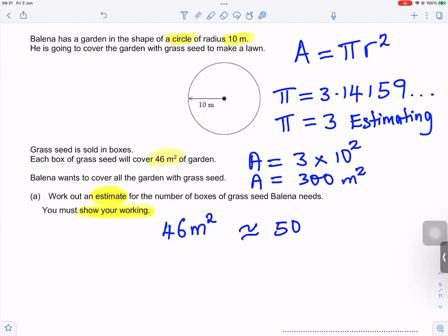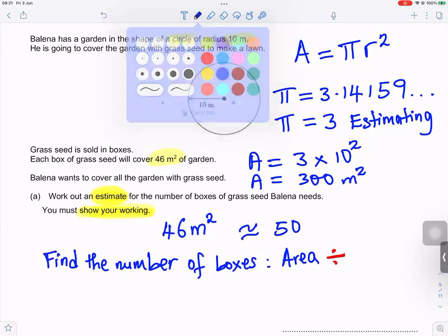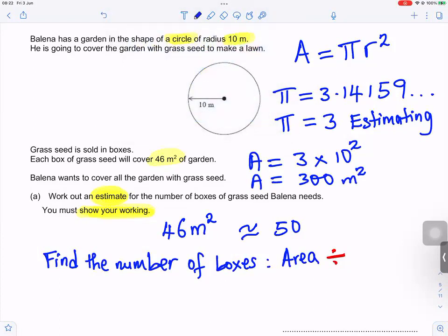To work out the calculation to find the number of boxes. To find the number of boxes, you divide. To find the number of boxes that you need is the area divided by the coverage figure. The area divided by the figure or the coverage figure. So that gives you 300 divided by 50, and that gives you six.